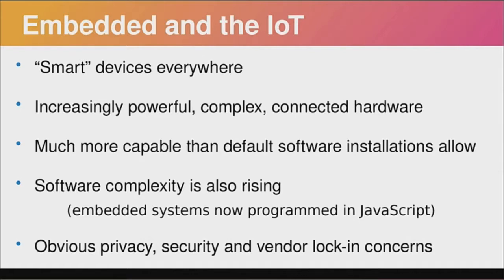Today's embedded systems are very different from ones 15 years ago. We don't have just a simple microcontroller driving an LCD display. Today's devices are smart and connected, much more powerful. In simple products like a bicycle, you can ask how many processor cores it has inside — and that question actually makes sense today, whereas 20 years ago people would have laughed. Besides hardware complexity, software complexity is rising a lot. There are products where the embedded interface is programmed in JavaScript, running something like the Chromium embedded framework — basically a web application running on the device.